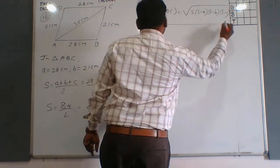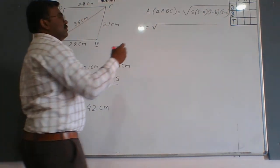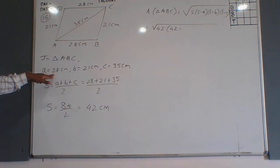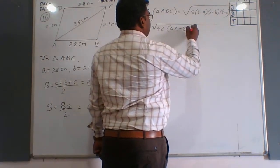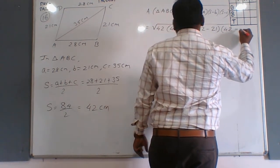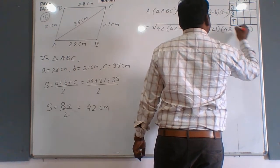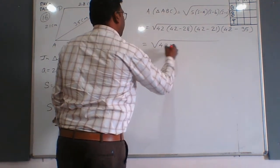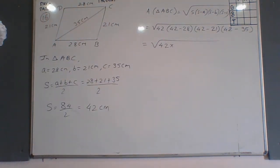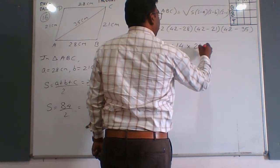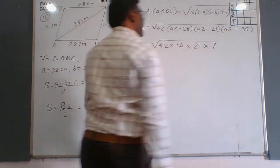Substituting the values: s = 42, so we get √(42 × (42−28) × (42−21) × (42−35)) = √(42 × 14 × 21 × 7).